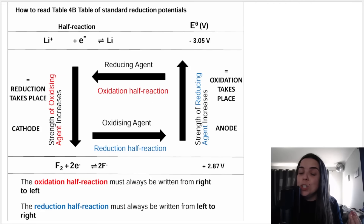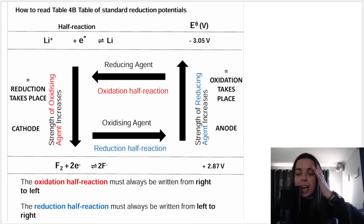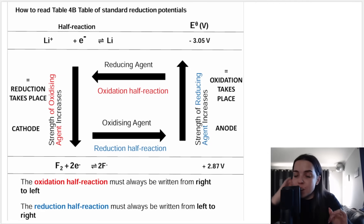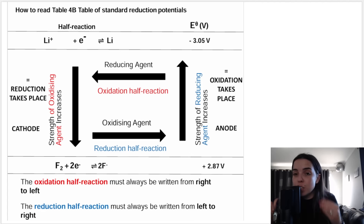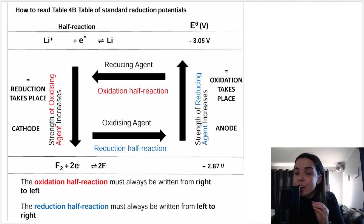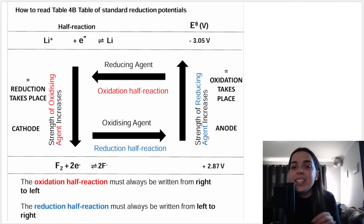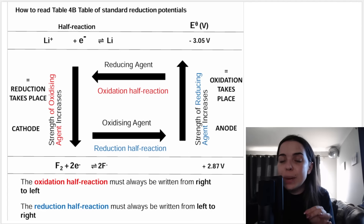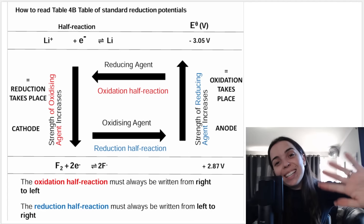I hope this has helped you learn how to read the table and how to write oxidation and reduction half reactions, and therefore how to determine which electrode is the anode versus which is the cathode. I'll see you in more videos on this playlist for more electrochemistry. Bye everybody.